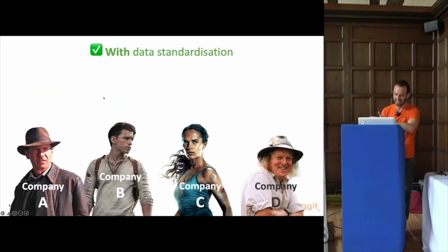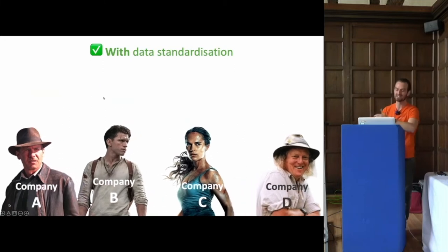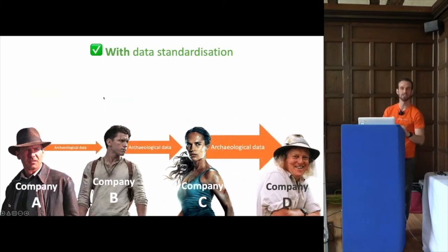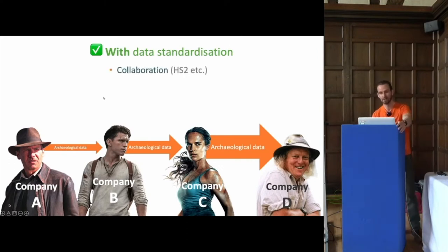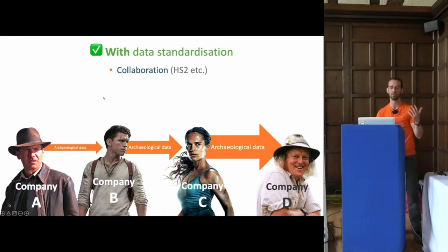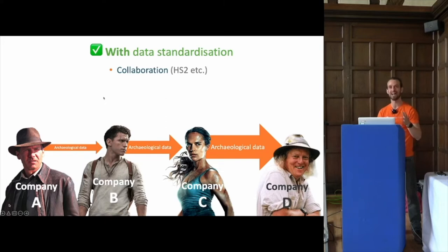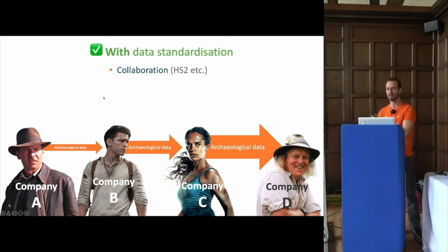When this data is standardized, it brings significant advantages. The first and most obvious is collaboration. With large infrastructure projects like HS2, collaboration is important — you need a lot of archaeologists, and sometimes one company can't provide all of them. With data standardization between companies working together, they can easily share data as they're recording it, and also easily share it with clients and other interested third parties.